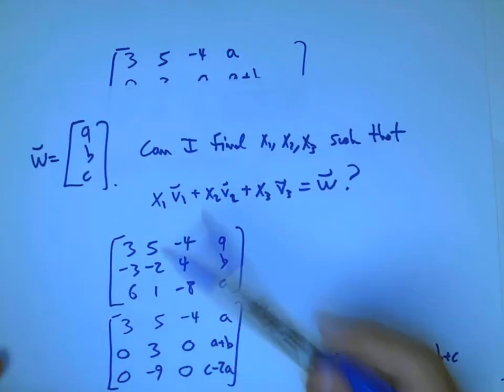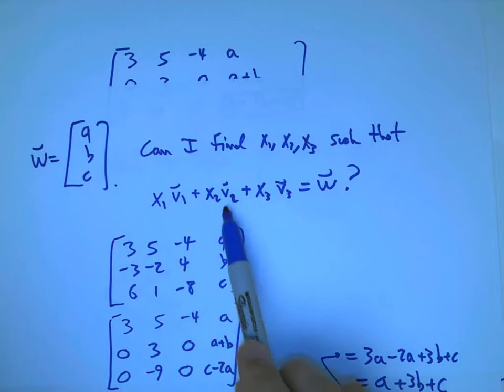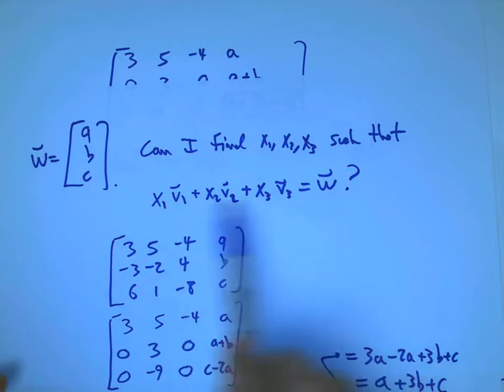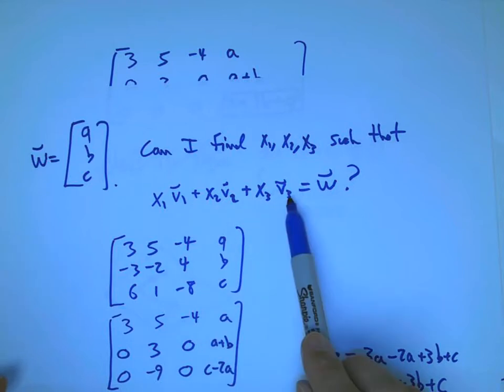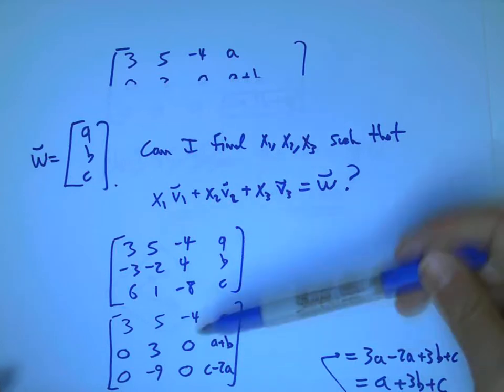What we took was an explicit or parameterized description of the plane. All things that I can make in this way. Some multiple v1 plus some multiple v2 plus some multiple v3. That's an explicit parameterized version. It's great for creating stuff in the plane. But it's not so great for testing when is a random w in the plane.